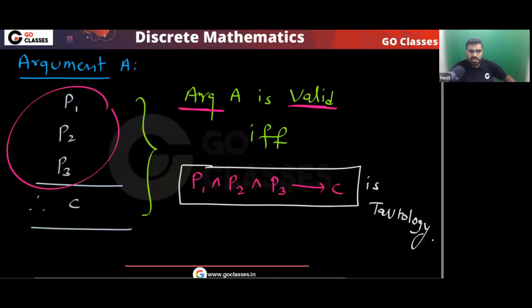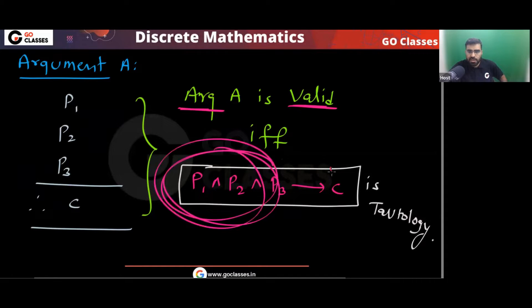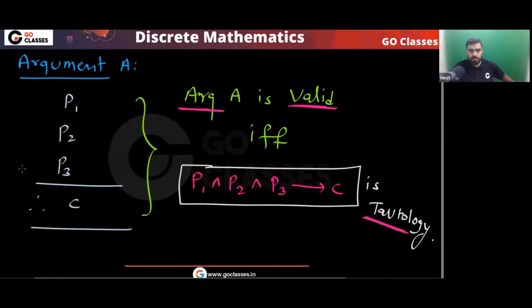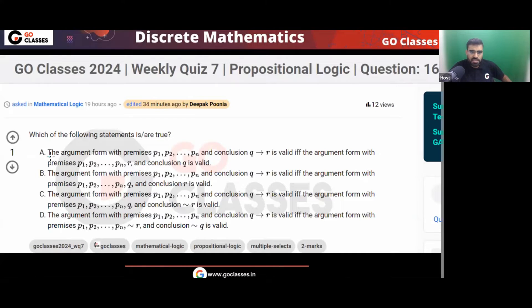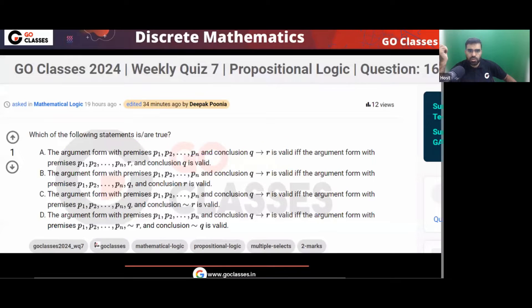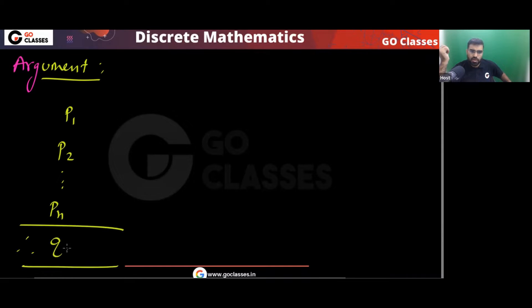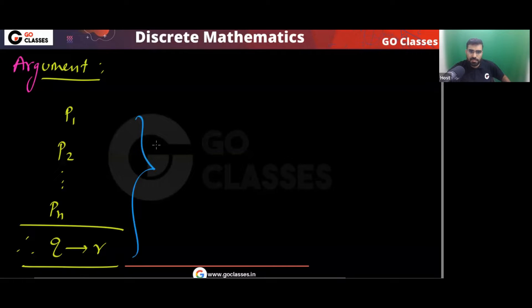This is the definition of a valid argument. Now look at the options. The question says: the argument form with premises P1, P2, ..., Pn and conclusion Q implies R — is valid if and only if what? In this question, the argument has premises P1, P2, ..., Pn and conclusion Q implies R. So what can you say about this argument's validity?